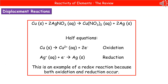We need to be able to write balanced symbol equations for these displacement reactions of metals. For example, copper reacting with silver nitrate: copper is more reactive than silver, so we start with Cu solid and AgNO3, and copper displaces the silver, giving us Cu(NO3)2 and silver Ag on its own. When working this out, we remember that NO3 has a single minus charge, so with Cu2+ we need two nitrate ions to balance the charges.